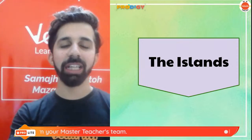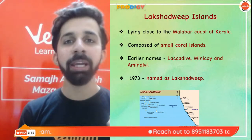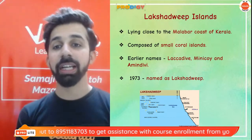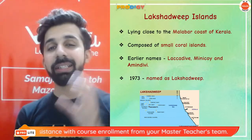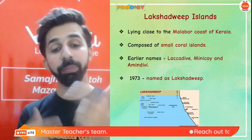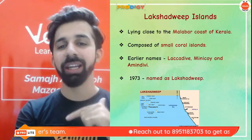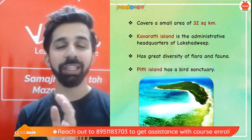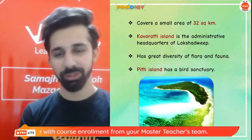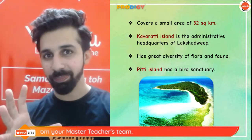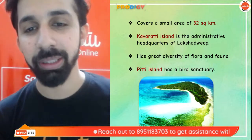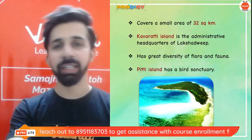There are two island groups: Lakshadweep in the Arabian Sea and Andaman and Nicobar in the Bay of Bengal. Lakshadweep lies very close to the Malabar coast (Kerala) and consists of small coral islands. It was named in 1973; before that it was known as Laccadive, Minicoy and Amindivi. It covers an area of just 32 square kilometers. Kavaratti is the administrative headquarters. Despite being very small, it has great diversity of flora and fauna, and Pitti Island has a bird sanctuary.